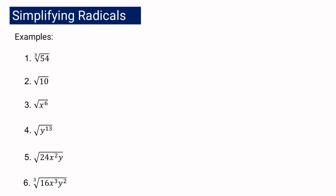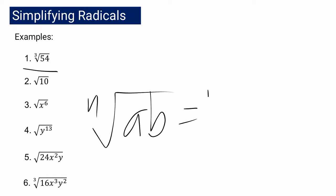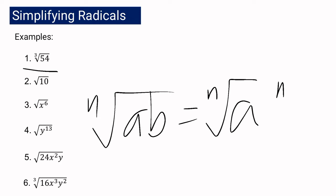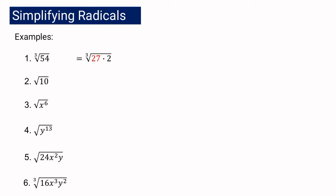Let us have the following radical expressions as our examples. Considering number one, we have the cube root of 54. We know that 54 is not a perfect cube. But using law of radicals number two, wherein the nth root of AB equals the nth root of A multiplied by the nth root of B, we are going to look for the factors that is actually a perfect cube. 54 can be expressed as 27 times 2, wherein 27 is a perfect cube.